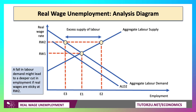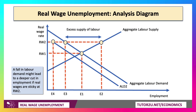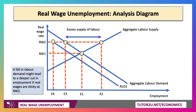A fall in labour demand might lead to a deeper cut in employment if real wages remain sticky at RW2. So let's say we have a recession, but real wages, for whatever reason, remain sticky. In that situation, there will be an even bigger fall in employment from E3 to E4. The idea behind classical economics, of course, is that markets are flexible — the market for labour is no different to the market for tomatoes or cheese. When demand falls, the price should fall. But of course, that doesn't necessarily happen in the labour market.